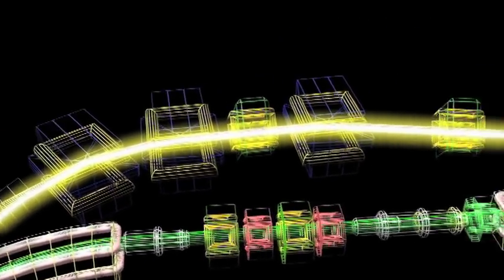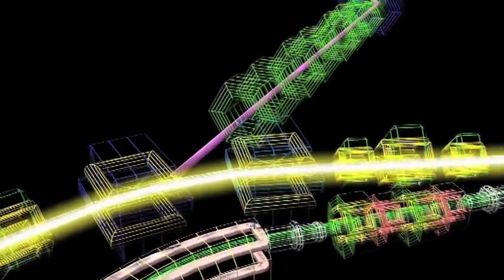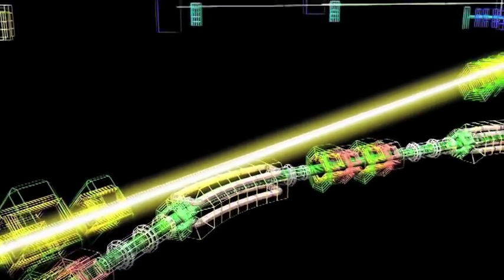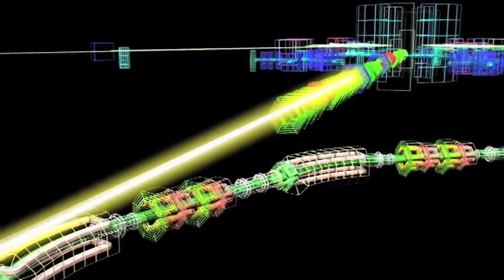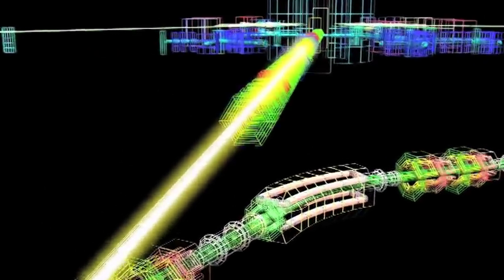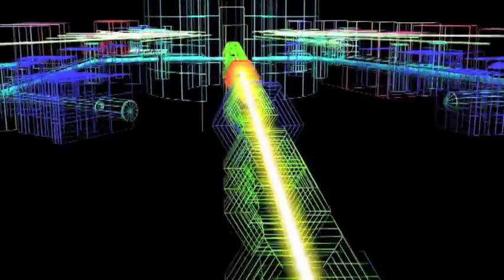After 12,000 revolutions of the synchrotron, the protons are now traveling at 84% of the speed of light. At this speed, they could travel six times around the Earth in just one second.